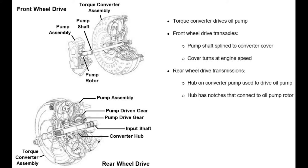The torque converter drives the transmission oil pump. In front-wheel drive transaxles, the oil pump drive shaft is splined to the converter cover. Since they are splined together, both the converter cover and the transmission oil pump turn at engine speed. For rear-wheel drive transmissions, the hub on the converter pump is used to drive the oil pump. The converter hub has notches that directly connect to the oil pump rotor or gear.